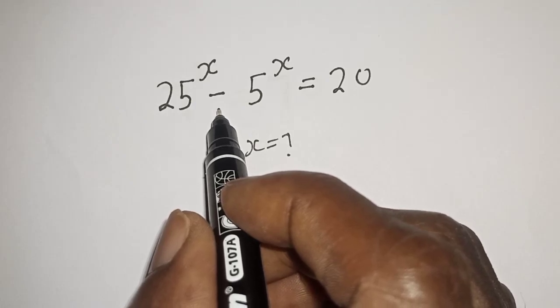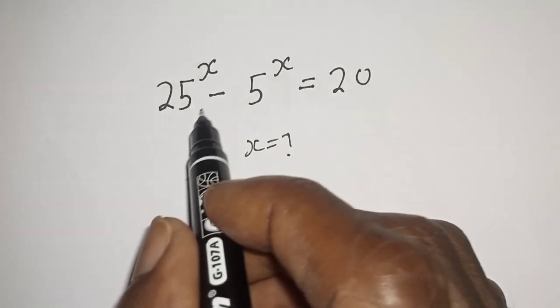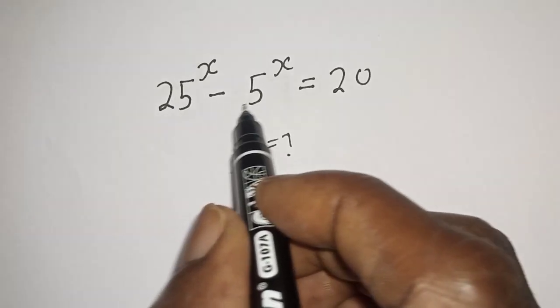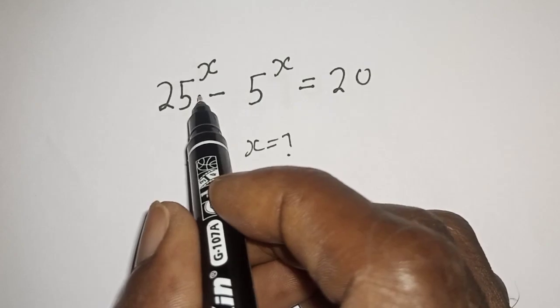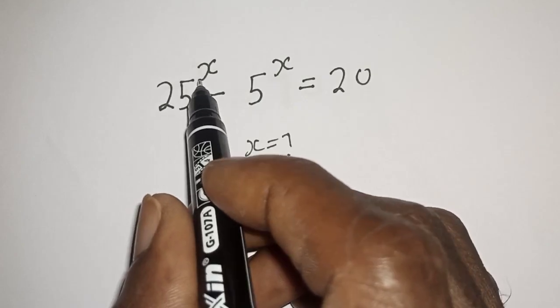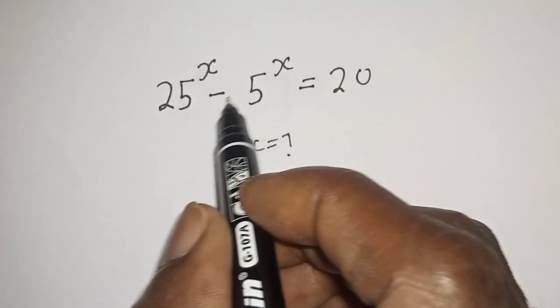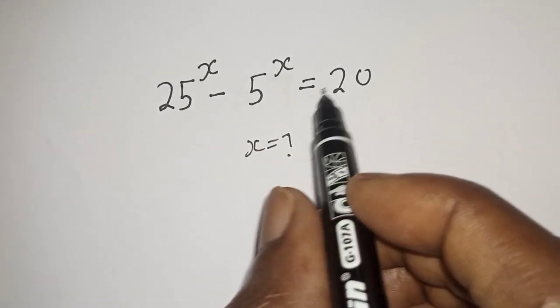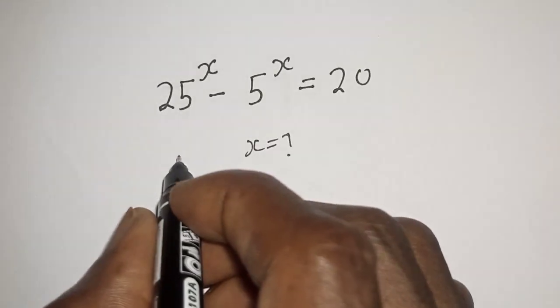Hello, welcome to Math Focus. We want to find the value of s from this given equation: 25 raised to power s minus 5 raised to power s is equal to 20.